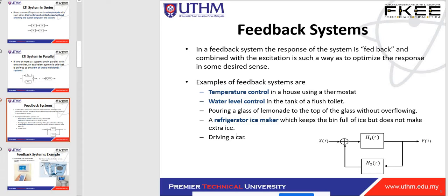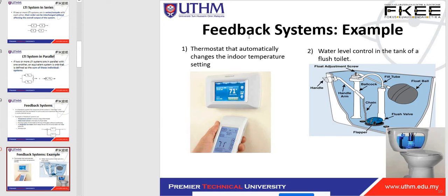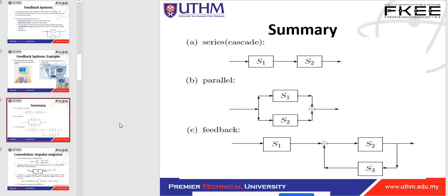Another example of a feedback system is a thermostat that automatically changes the indoor temperature setting — for example, set to 71 degrees Fahrenheit. Water level control in a flush toilet tank uses a float bowl to control the water level. In summary, there are three types of connection: series connection, parallel connection, and feedback connection.